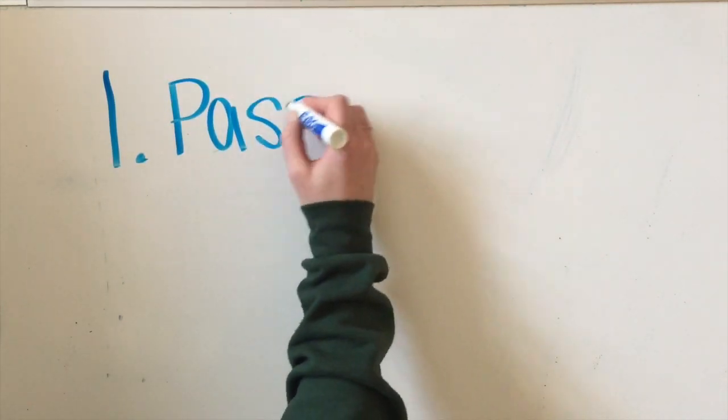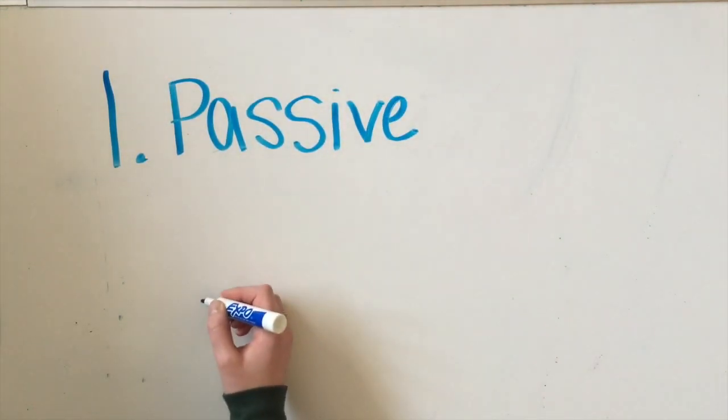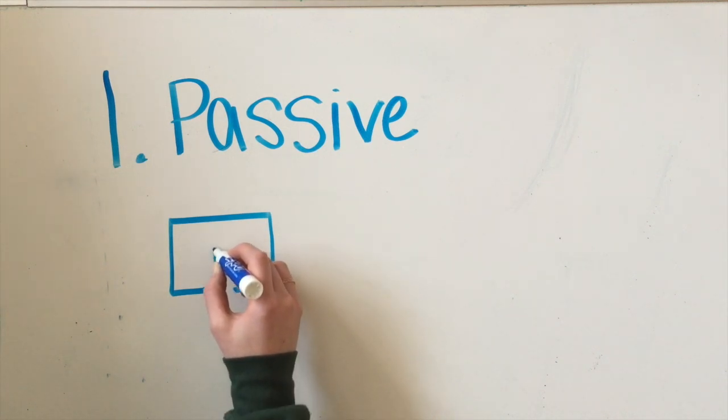First, let's talk about the passive strategy. This is when you observe how the person reacts with others from a distance.